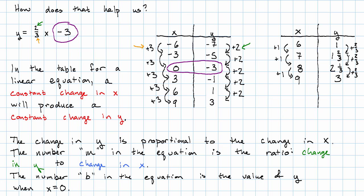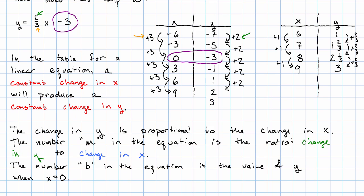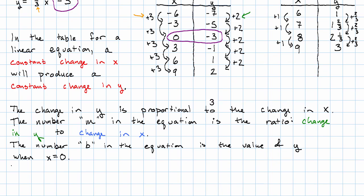If we decide that we want each value of x to go up by one, then we add two thirds to y every time x goes up by one. Now, this perspective shift between the ratio of the changes and the change in y when the change in x is one is going to end up being really, really useful to us.